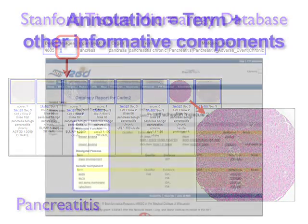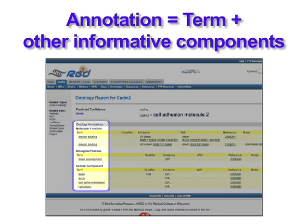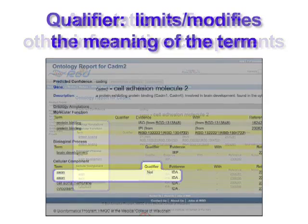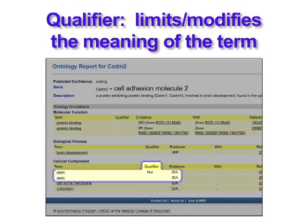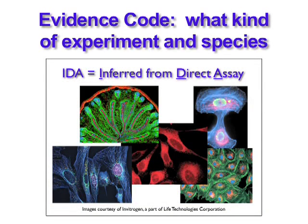So here's a recap of what we've talked about. Although the ontology term itself is the most important part of an ontology annotation, sometimes there are other informative components that are presented. When a qualifier is present, it limits or modifies the meaning of the ontology term. The evidence code gives you an indication of what kind of experiment was done to support the assignment of an ontology term to a data object such as a gene, and whether the experiments were done with material from the species being annotated or another species.